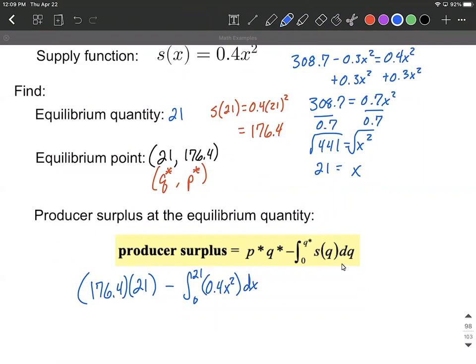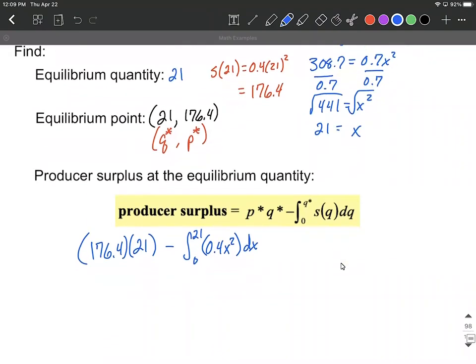All right, variables are a little bit different in the formula, but we're gonna use the variables that are given in our function. Okay, so next up, let's do some integrating. Let's also go ahead and multiply these two together. We get 3,704.4 minus this will be 0.4 comes along the constant. We're gonna increase the exponent by one and divide by our new exponent, and then evaluate this between zero and 21.